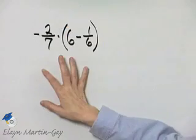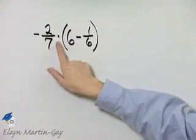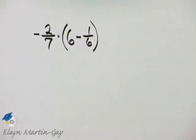Let's perform the indicated operations. I have multiplication and I have subtraction. Don't forget order of operations.